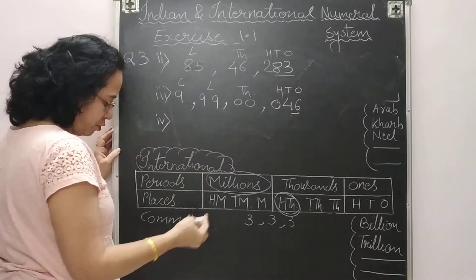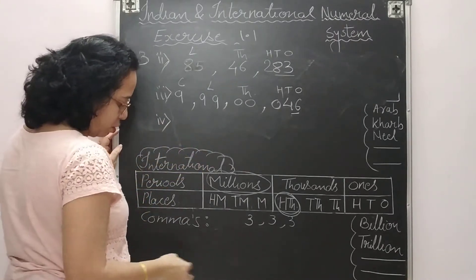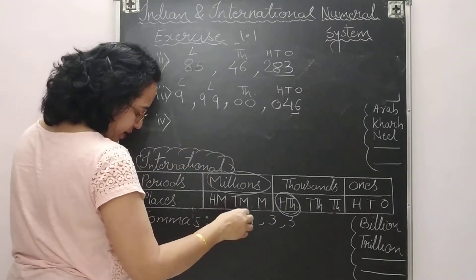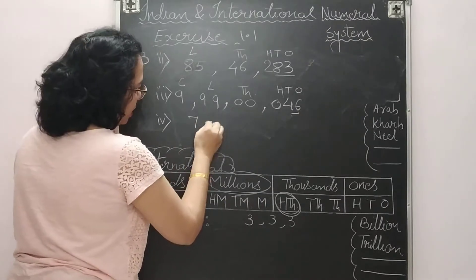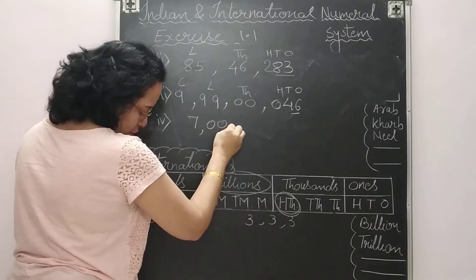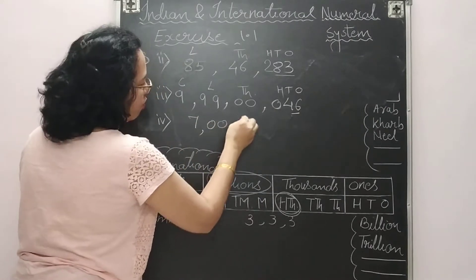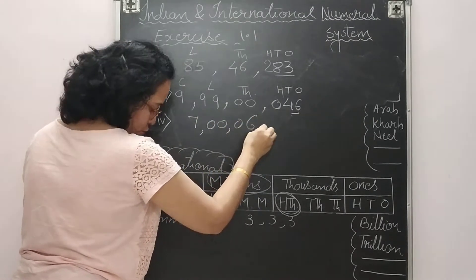For the third number: 0, 4, 6 — then two zeros — put comma — then 9, 9 — put comma — then 9. Identifying periods: ones, tens, hundreds, thousands, lakhs, crores. So we write: nine crores, ninety-nine lakhs, and forty-six. Since there is no thousand and no hundreds, we go directly to 46.